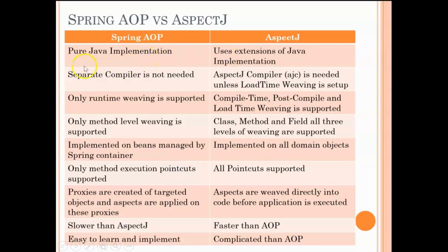As far as AOP is concerned, it is a pure Java implementation — it does not need any extensions, and only Spring APIs are needed. Whereas AspectJ uses extensions of Java for its implementation. For Spring AOP, you do not need a separate compiler, whereas for AspectJ you need a separate compiler — AJC — for running your code, unless it is load time weaving, in which case you do not need a compiler.